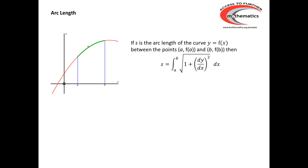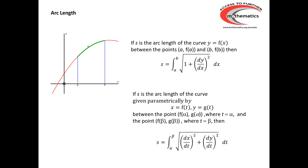For arc length, for a curve given in Cartesian coordinates, we have the arc length given by the integral of the square root of 1 plus (dy/dx) squared. And if we have a curve given parametrically, then the arc length is given by the integral of the square root of (dx/dt) squared plus (dy/dt) squared.